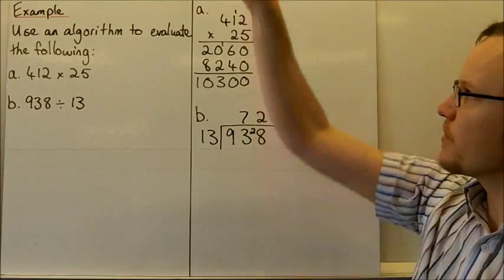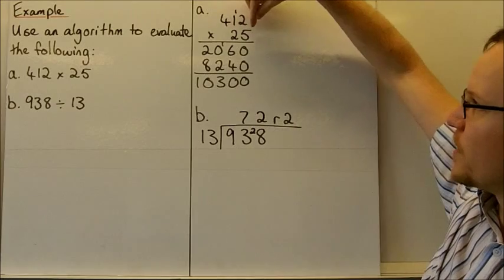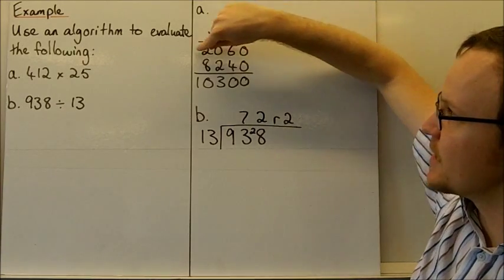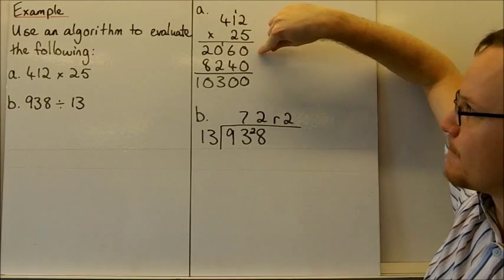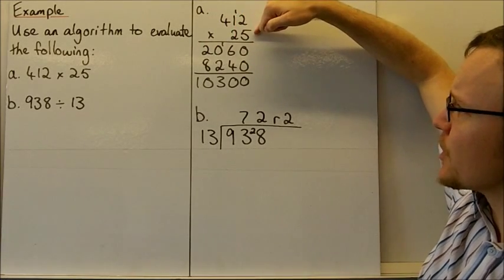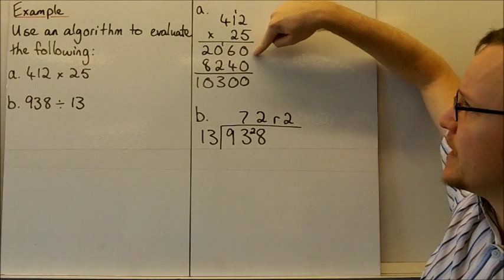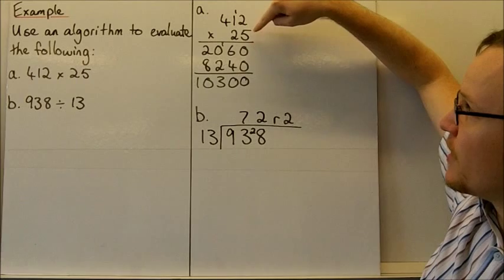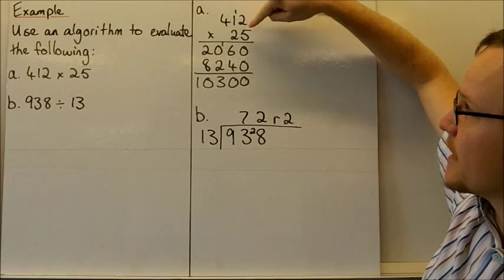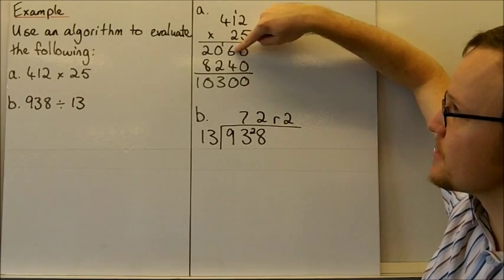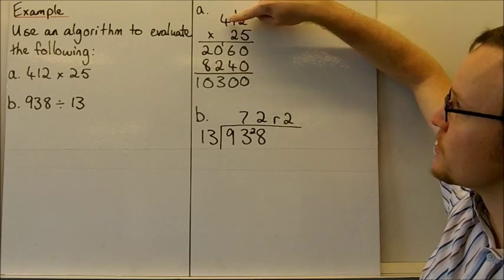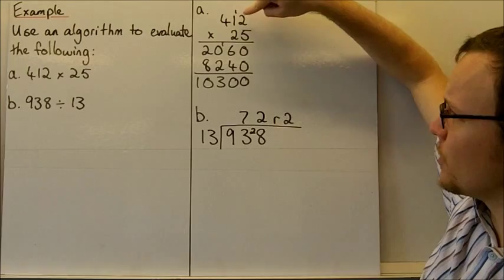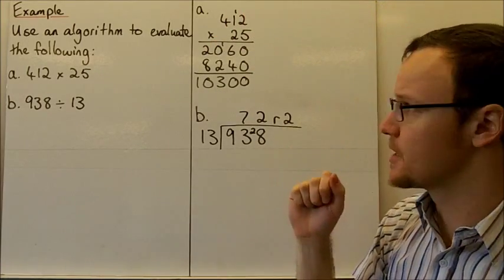For the multiplication algorithm, 412 × 25: First, we multiply the ones column. 5 × 2 = 10, carry the one. 1 × 5 = 5, plus the extra one is 6. Then 5 × 4 = 20. So for the ones column, we get 2,060.